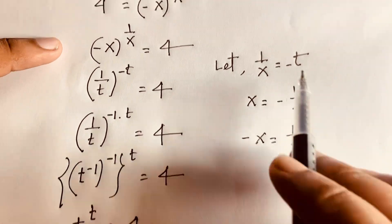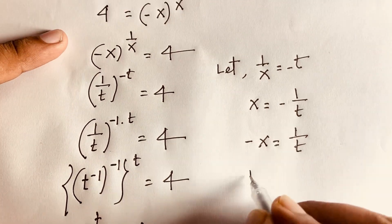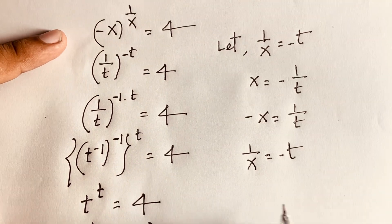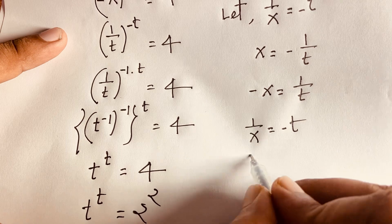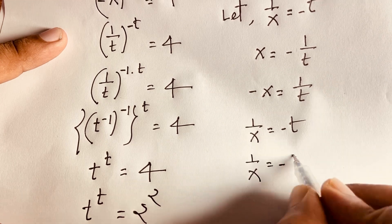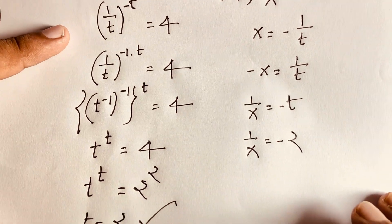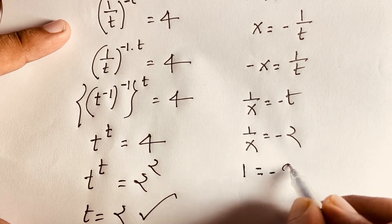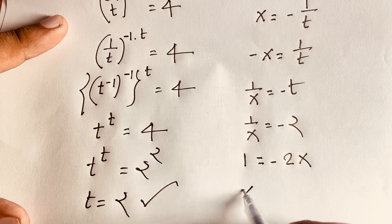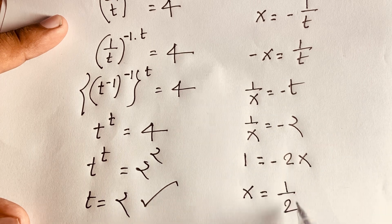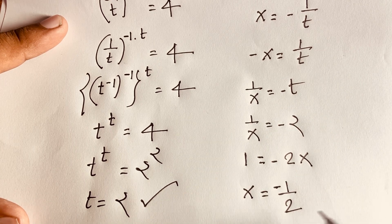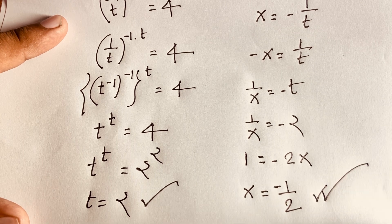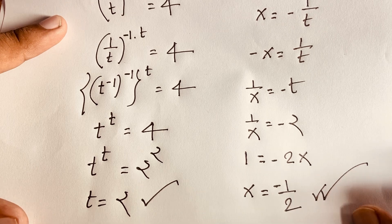Putting the value of t back: since 1 over x equals negative t and t equals 2, we get 1 over x is equal to minus 2. Multiplying both sides by x gives 1 equals minus 2x. Dividing both sides by minus 2, we find x is equal to negative 1 over 2.